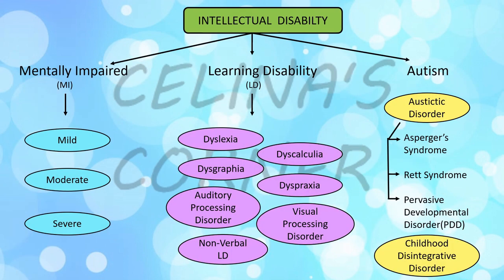Now let's talk about intellectual disability. There are three types: mentally impaired, learning disability, and autism. Mentally impaired children are categorized by three degrees of severity — mild, moderate, and severe. The IQ level for mild is 50 to 70, moderate is 35 to 55, and severe is 20 to 40.